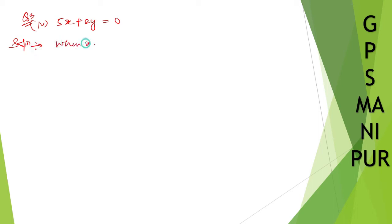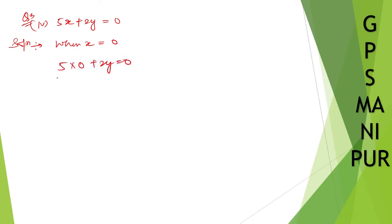When x is equal to 0, y will be 0. Let me show you: 5 into 0 plus 2y equal to 0, so 5 times 0 is 0, so 2y equal to 0, so y is equal to 0.